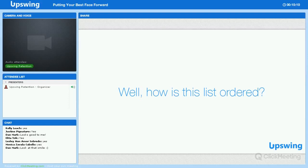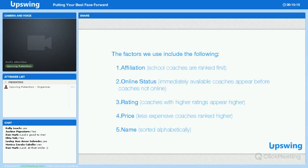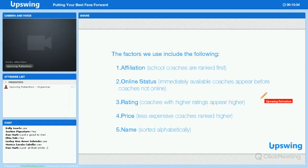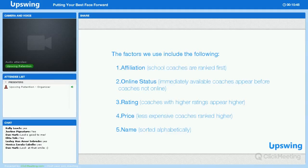So what goes into the algorithm? The first thing we look at is the coach's affiliation. Coaches who work directly for one of our partner colleges are ranked higher than Upstream coaches. However, colleges who make use of their own coaches generally don't also make use of Upstream coaches, so as an Upstream coach this doesn't really affect you. The second important factor is whether you're immediately available for a session — if that is the case, you'll find yourself ranking much higher than coaches who aren't immediately available.